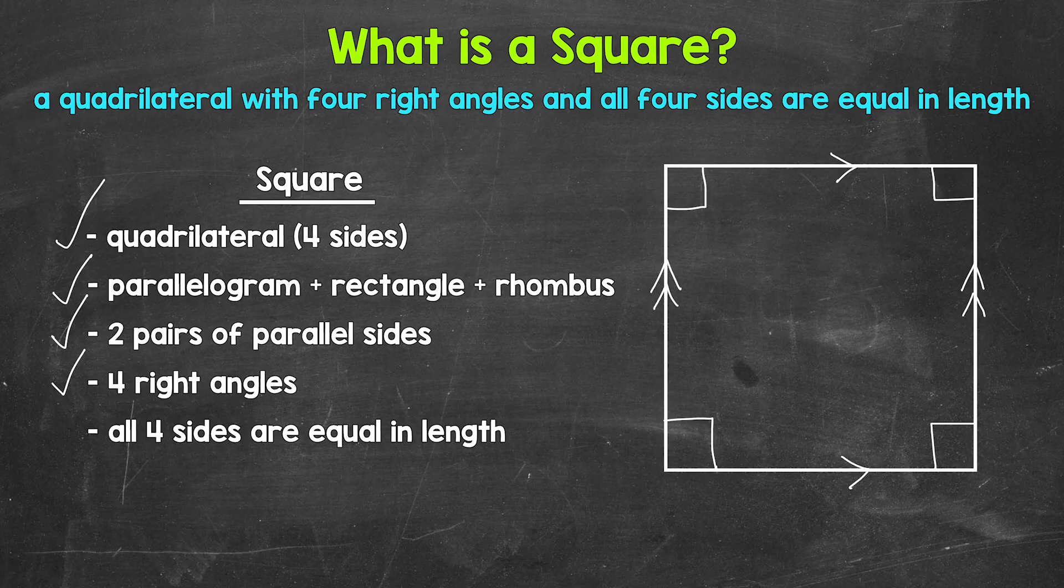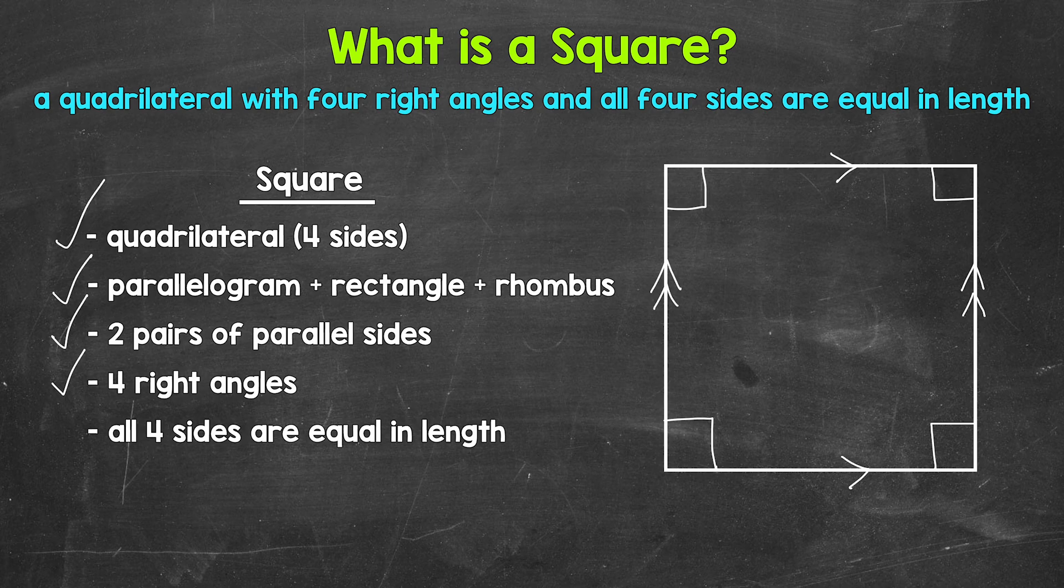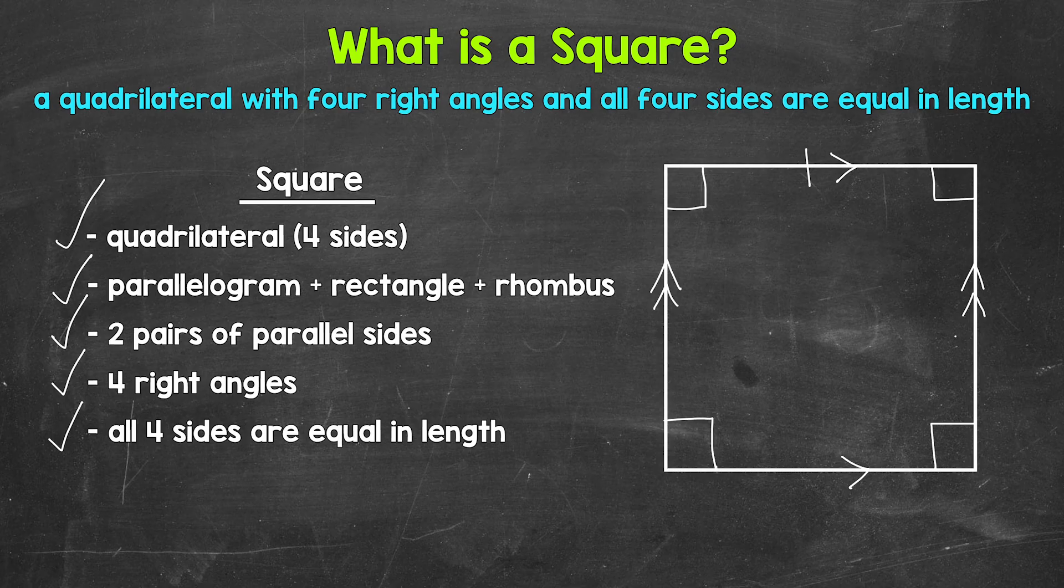And to build off of that and take this a step further, squares are also rhombuses. Rhombuses are just parallelograms, but more specifically, all four sides are equal in length. So again, a square is a rhombus. They are parallelograms with four sides that are all the same length. So let's put a tick mark on each side of the square to show that all four sides are equal in length.